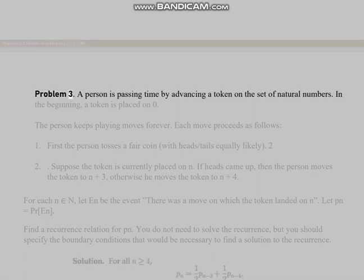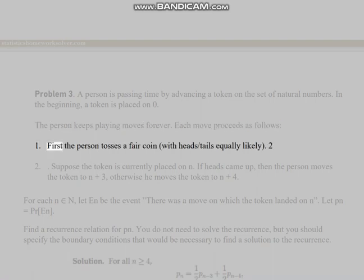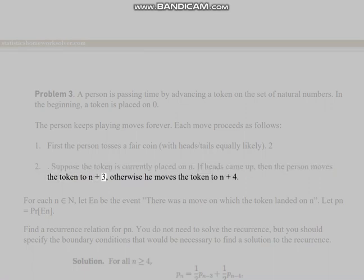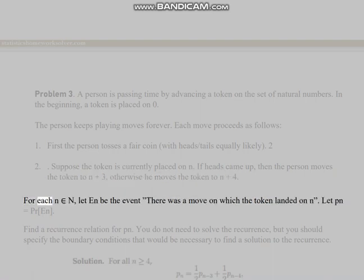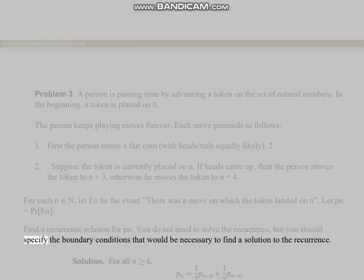Problem 3: A person is passing time by advancing a token on the set of natural numbers. In the beginning, a token is placed on 0. The person keeps playing moves forever. Each move proceeds as follows: 1) First the person tosses a fair coin, with heads/tails equally likely. 2) Suppose the token is currently placed on N. If heads came up, then the person moves the token to N+3, otherwise he moves the token to N+4. For each N, let A_N be the event there was a move on which the token landed on N. Let P_N = Pr(A_N). Find a recurrence relation for P_N. You do not need to solve the recurrence, but you should specify the boundary conditions that would be necessary to find a solution to the recurrence.